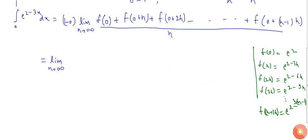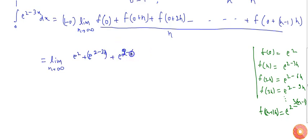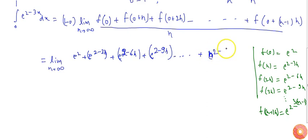Putting in all the values — f(0), f(h), f(2h), f(3h) — I get the sum: e² + e^(2-3h) + e^(2-6h) + e^(2-9h) + ... up to e^(2 - 3(n-1)h).